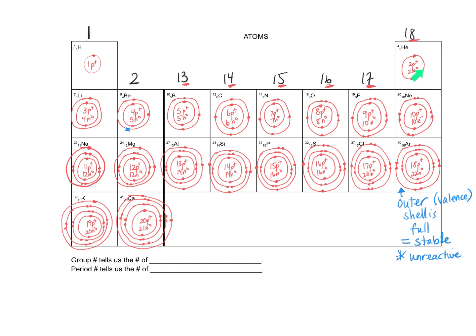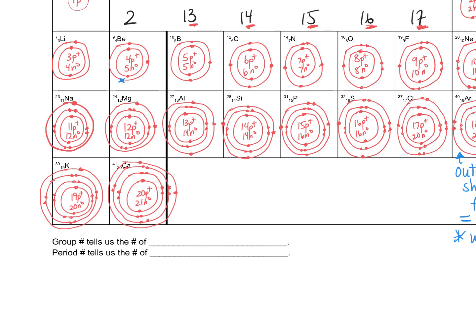That's why it's a good idea to put helium in your birthday balloon, not hydrogen — hydrogen will react, but helium won't. So to summarize: the group number tells us the number of electrons in the outer shell — these are known as valence electrons. The group number tells us the number of valence electrons, which are the electrons in the outer shell or outer orbit. For calcium, there are two.